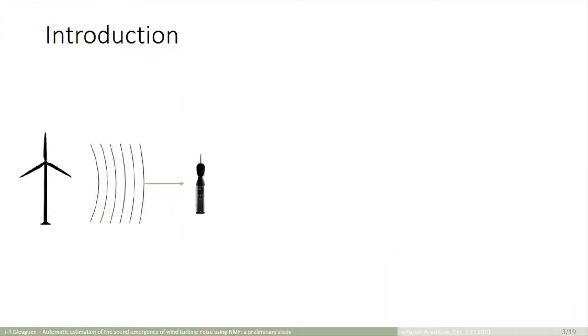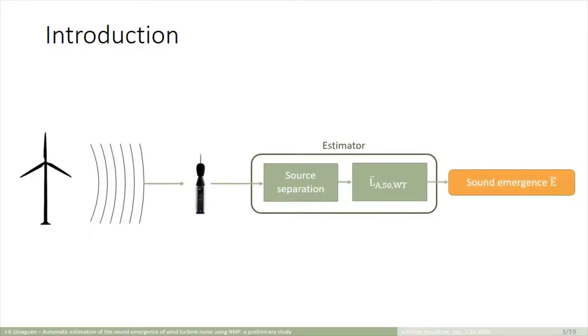Consequently, we propose a tool to estimate continuously the sound emergence of wind turbines. The estimator is based on the extraction of the wind turbine noise from the ambient noise with the help of source separation. With this extracted component, it will be possible to estimate the sound emergence of noise.